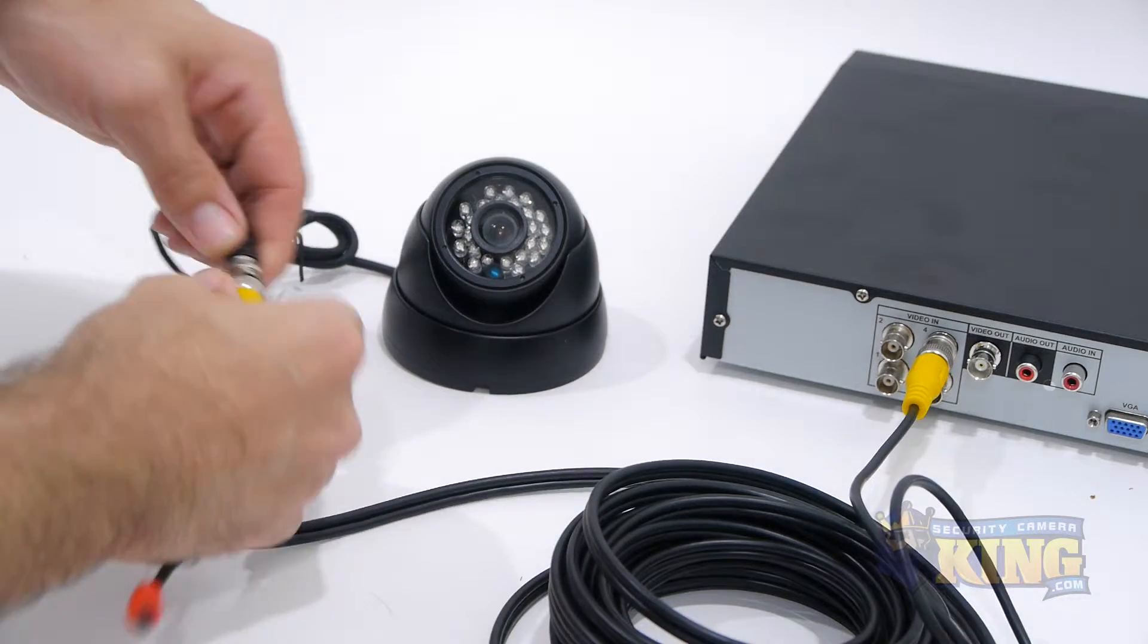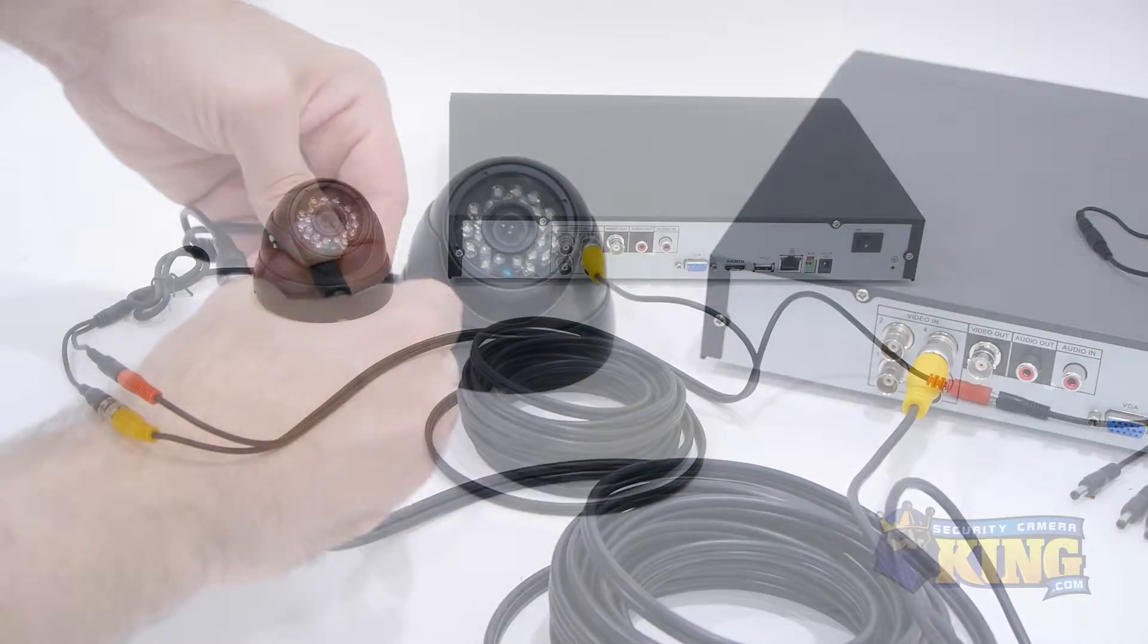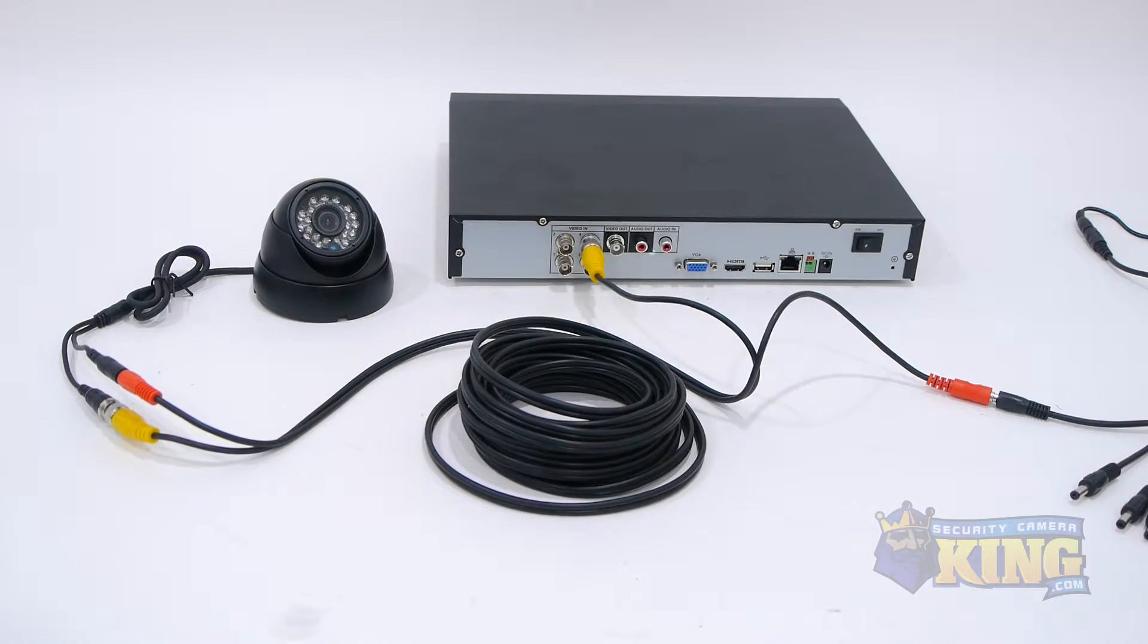Now on the camera end, simply connect the BNC and power cables in the same manner. That's it! Your cameras are now powered and connected to your DVR.